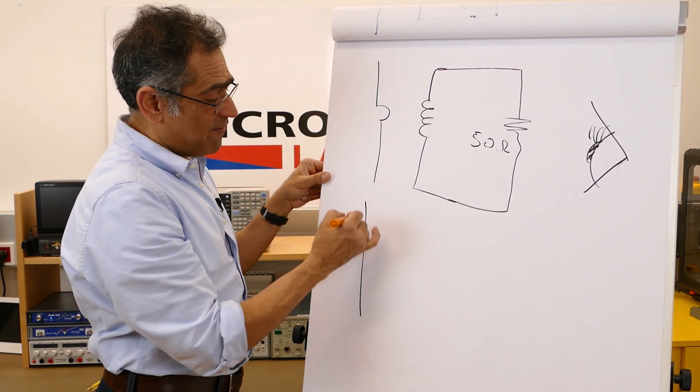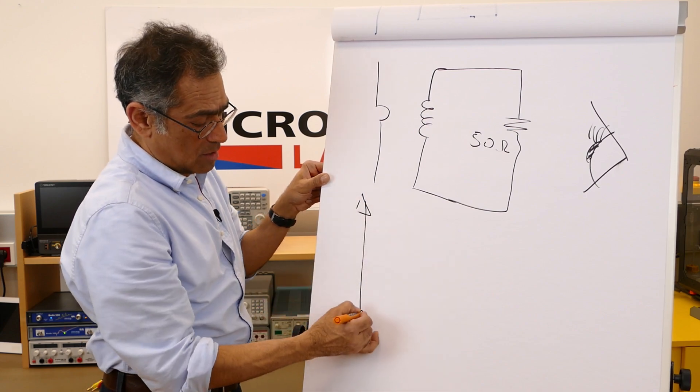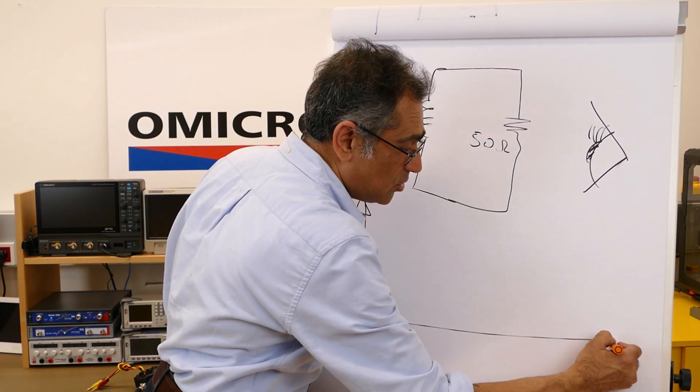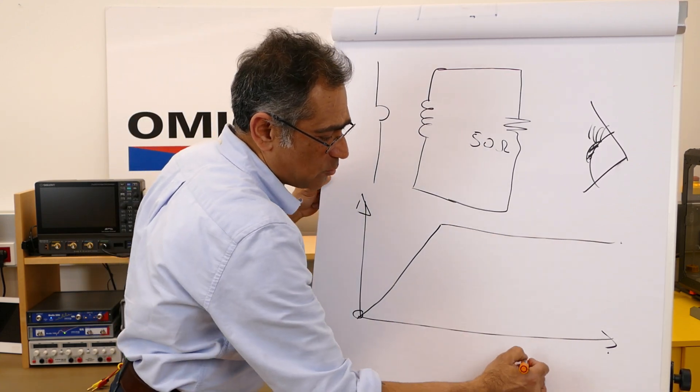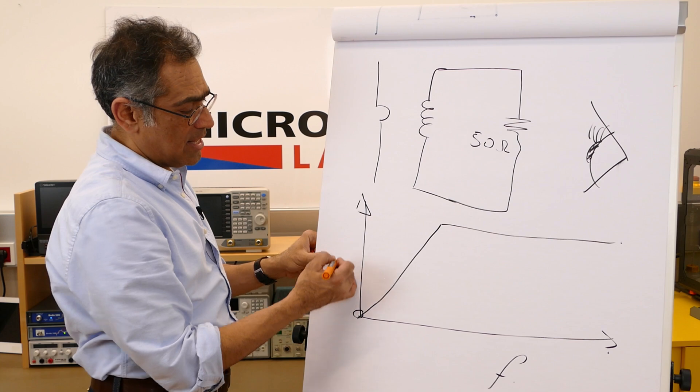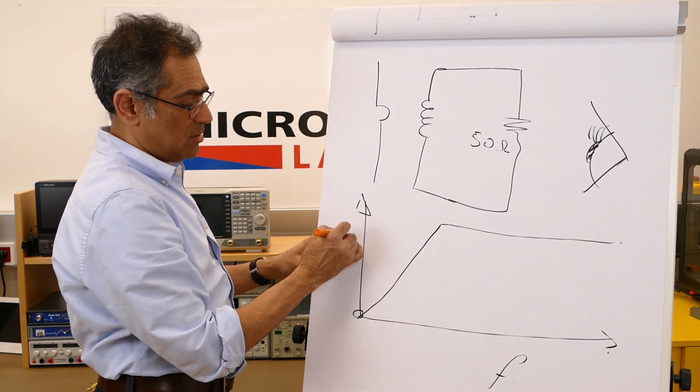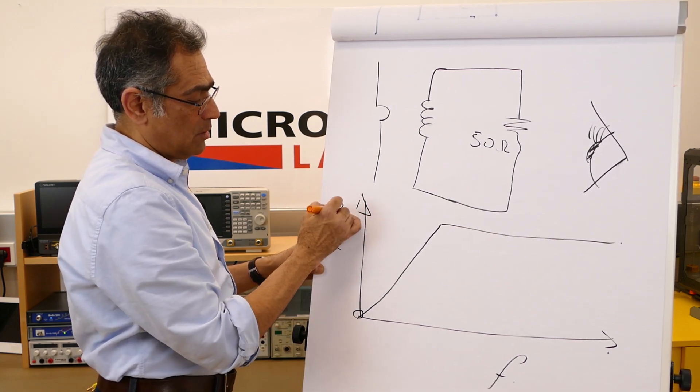So the manufacturer of your current clamp usually provides you with an impedance plot, and it looks typically something like this whereby this is your frequency and this is your impedance.